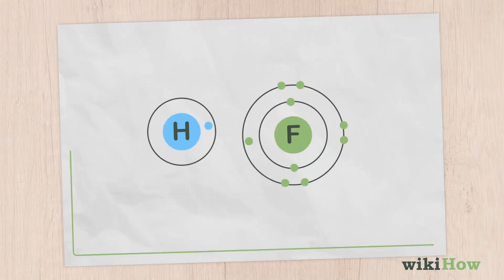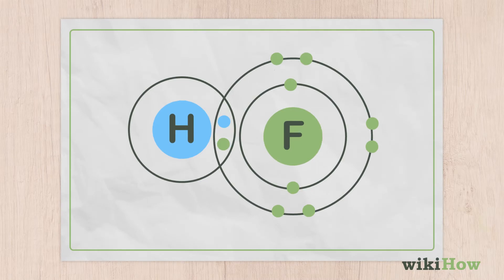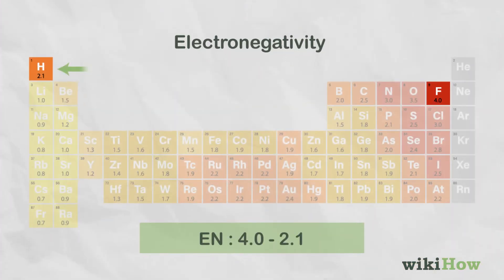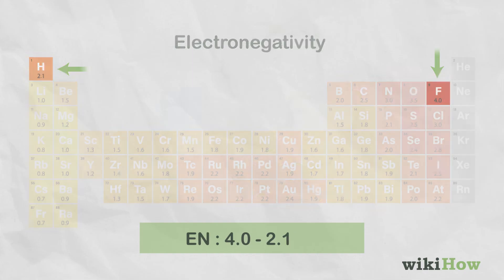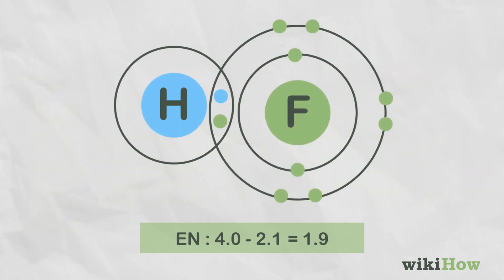For instance, in a bonded pair of hydrogen and fluorine atoms, hydrogen has an electronegativity of 2.1, while fluorine has an electronegativity of 4.0. The difference between them is 1.9.